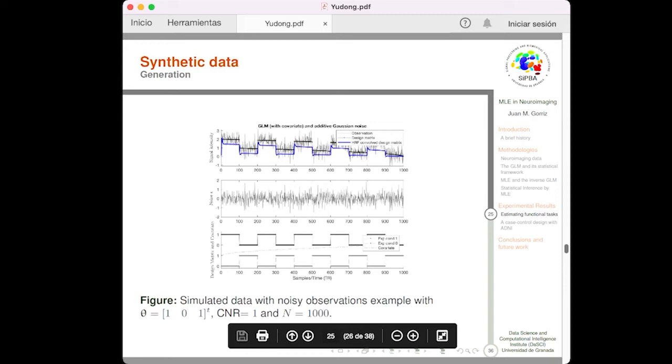In this figure, I show you the simulated data that we are using in this part of experiments. This is more than realistic, as you can see in the top of the figure, the observations are very noisy, and in the bottom of the figure, we see the two experimental conditions and the covariate, the nuisance variable, that is included in the design matrix.